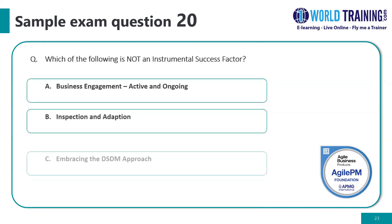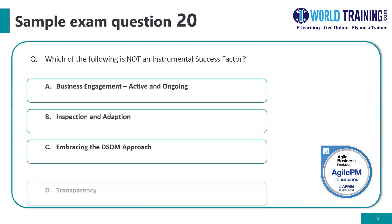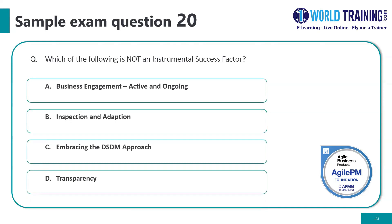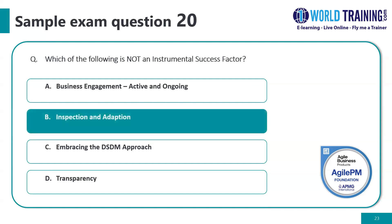Question twenty: which of the following is not an instrumental success factor? The correct answer is B: inspection and adaptation. Whereas A, C, and D are three of the six success factors we looked at.